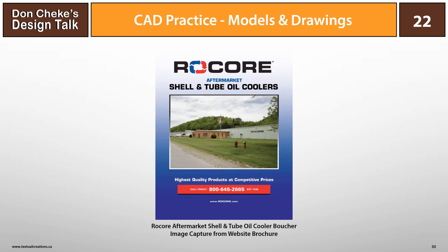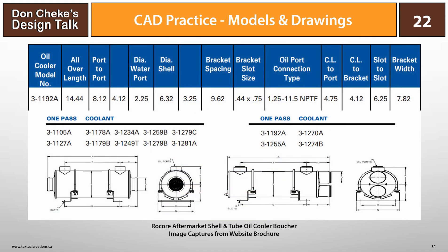By this point I knew what I wanted to model but had no idea what size to use. I stumbled across a Rokor brochure on a different website, which proved very beneficial. Within the brochure I found a table of sizes for different styles and models, so I narrowed my search to one specific size for the 3D model. In the end I decided on the 3-1192A model, using most of its dimensions while making a few small tweaks to make it my own.